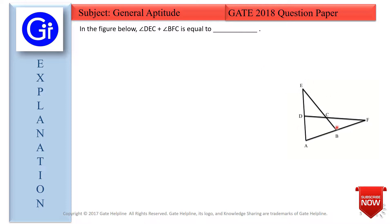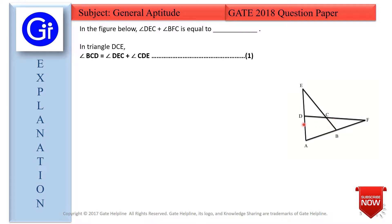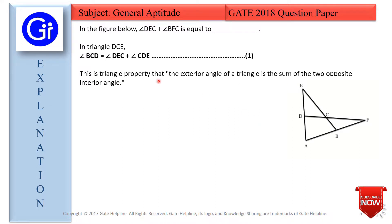This is the diagram given in the question. There are many triangles and we will start with triangle DCE. Angle BCD equals angle DEC plus angle CDE — this angle plus this angle equals this angle — and this we can prove with the help of the exterior angle theorem: the exterior angle of a triangle equals the sum of the two opposite interior angles.